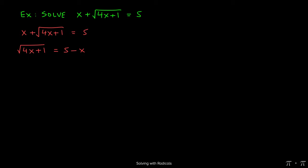This would give us the square root of 4x plus 1 equals 5 minus x. Once the radical is isolated, we recognize that this is a square root. So in order to get rid of it, we would need to square both sides.